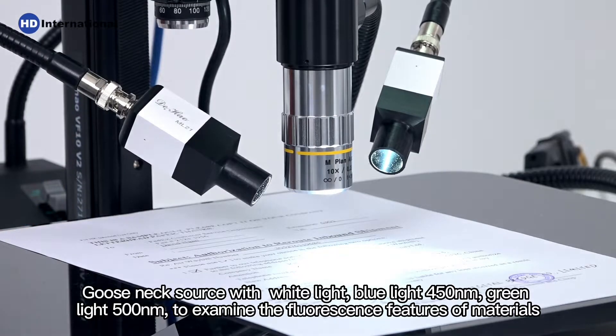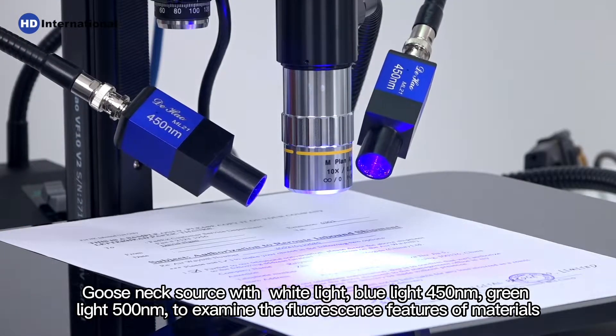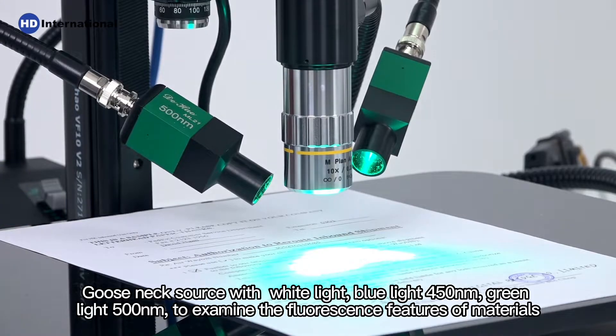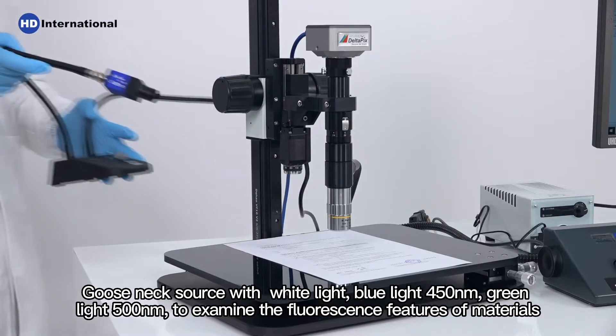The gooseneck source includes white light, blue light at 450 nanometers, and green light at 500 nanometers to examine the fluorescence features of materials.